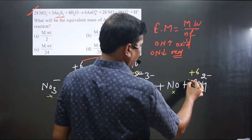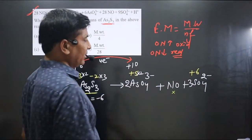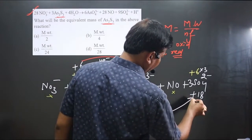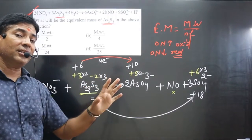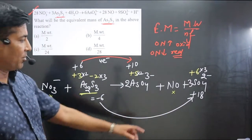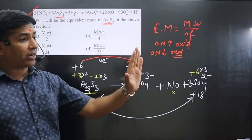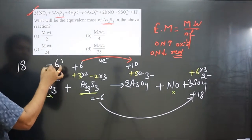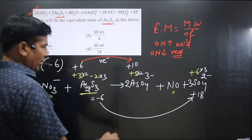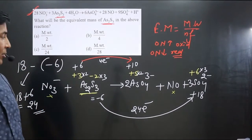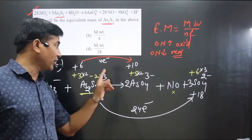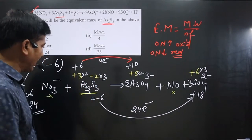On the right side, balance the sulfur atoms: 1 sulfur at +6 means 3 sulfur atoms give +18. Now find the difference in oxidation number for sulfur: 18 minus (−6) = 18 + 6 = 24 electrons. Both arsenic and sulfur are undergoing oxidation (increase in oxidation number). Total electron loss = 24 (sulfur) + 4 (arsenic) = 28. So the n-factor value is 28.